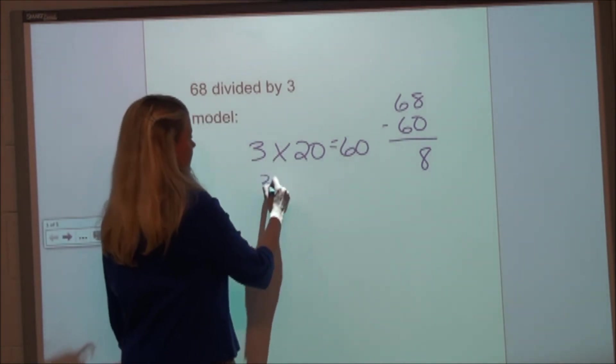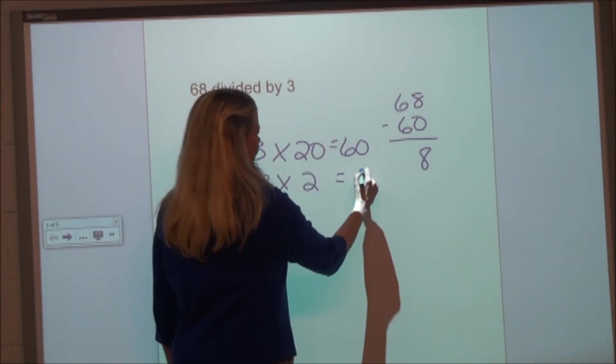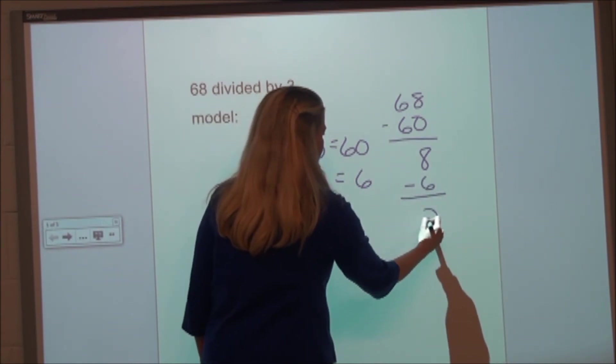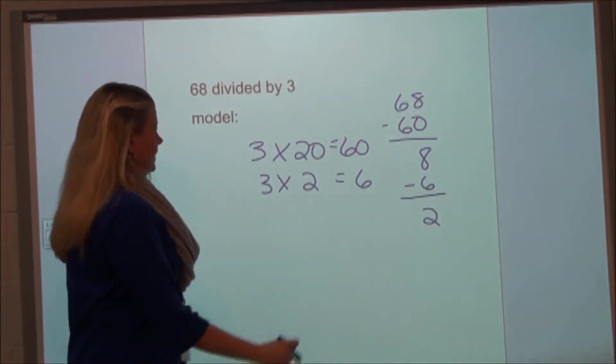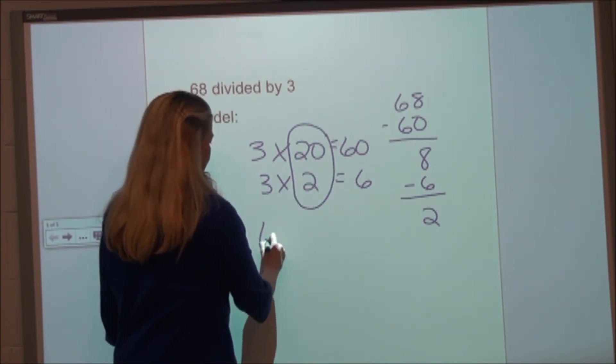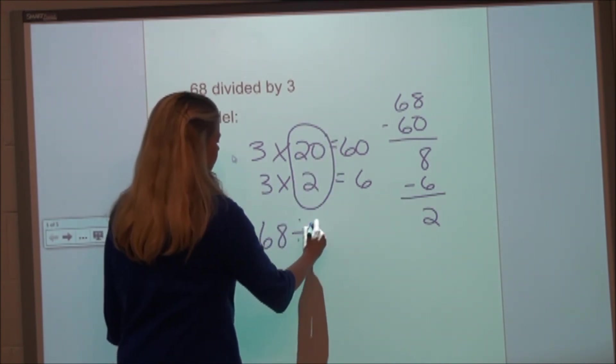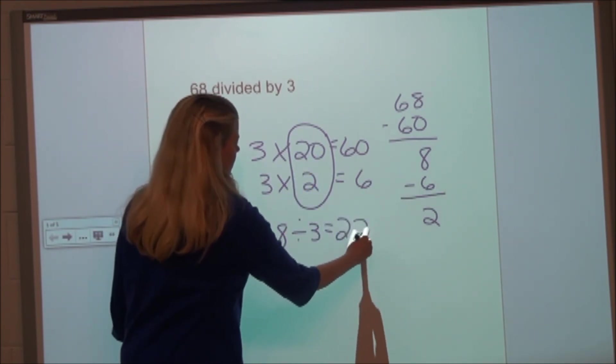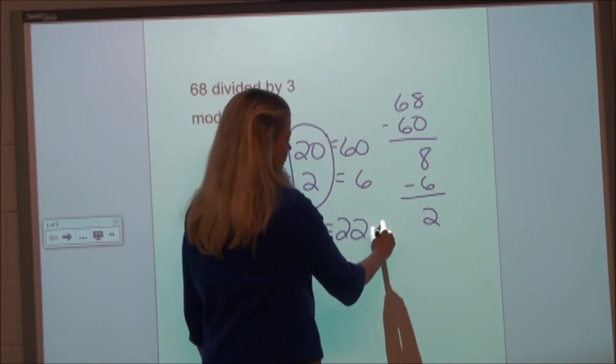Well, I also know that 3 times 2 is 6. So I can take that away, and I have 2 left over. So I know that 68 divided by 3 is 22 with a remainder of 2.